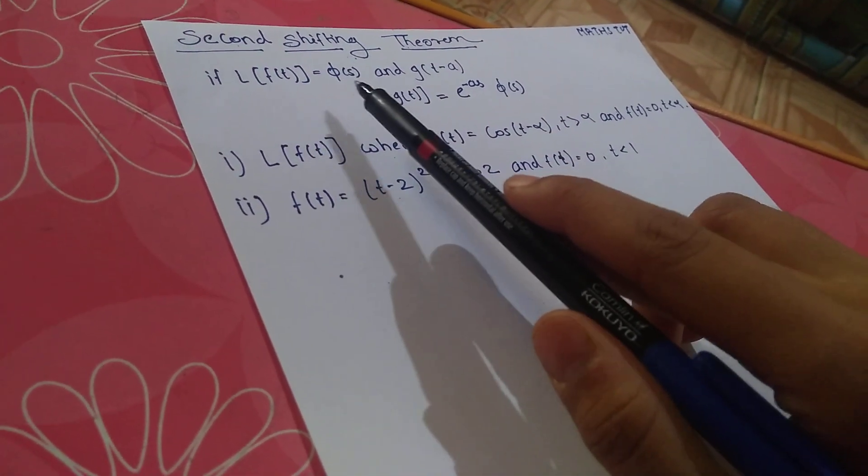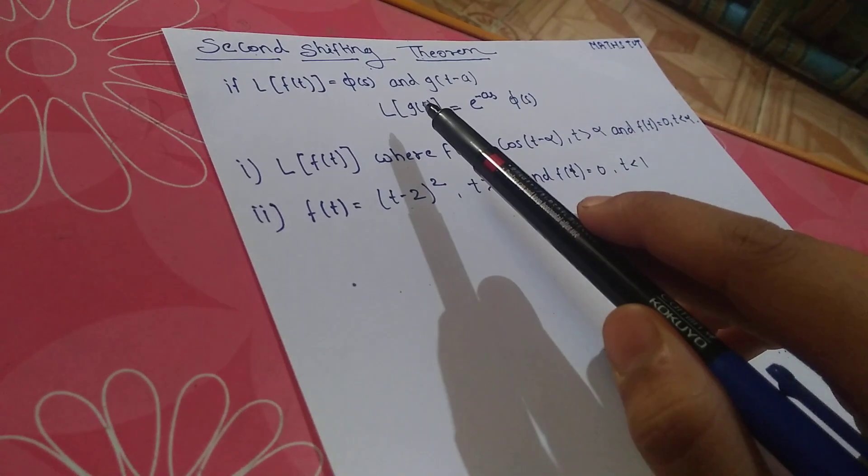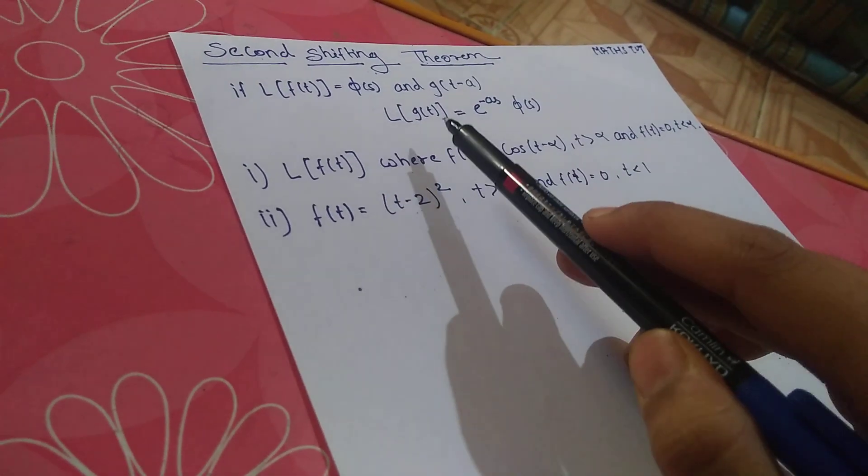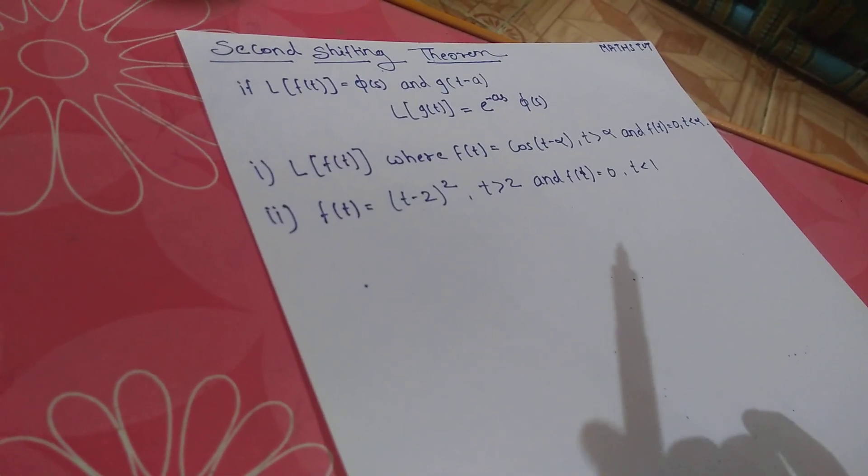If my Laplace of f(t) equals phi(s), and g(t) = f(t-a), then my Laplace of g(t) is e raised to minus as times phi(s). Okay, so we'll look at it by the problems.